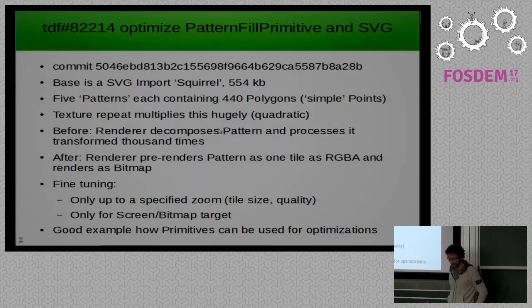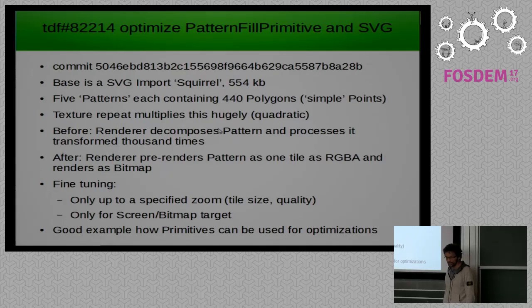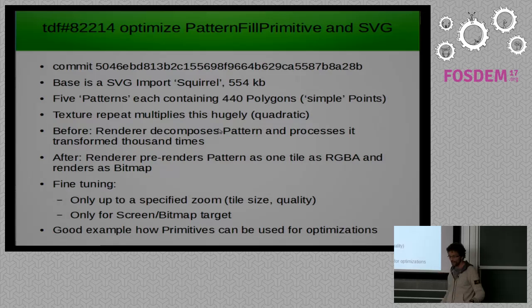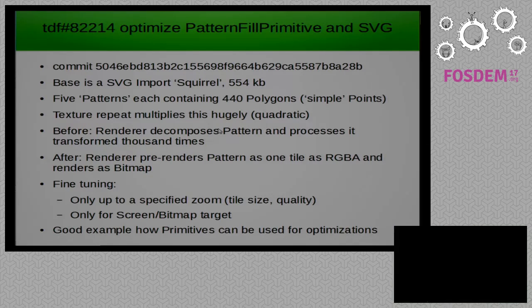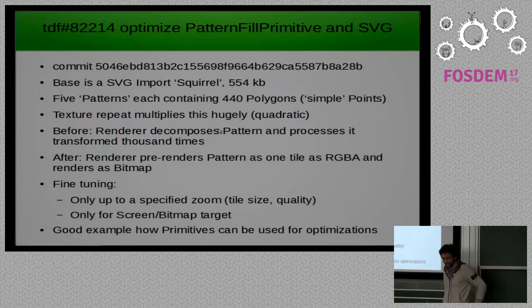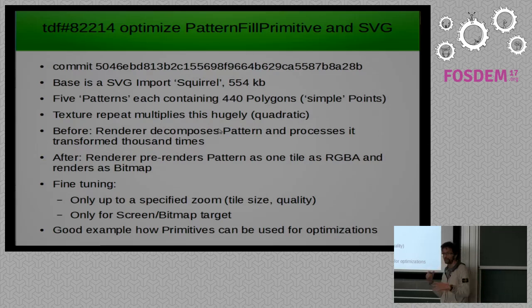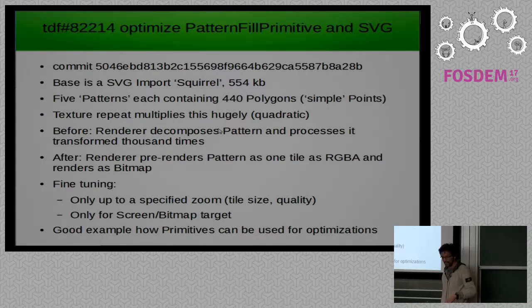Let's start with one of my favorite bugs from the last year: the squirrel bug. The problem is that we have an SVG import which we got from an external customer — I think it was Munich. They used an SVG graphic called squirrel in very small form inside Writer, and this document just didn't work. The reason was really this SVG graphic — it's pretty big, half a megabyte. The reason it works so slow is it contains five SVG patterns, each containing 440 polygons, just to describe simple points.